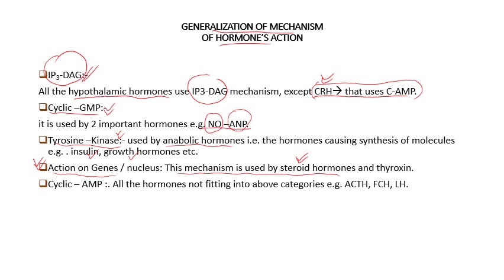The only non-steroid molecule that uses the action on nucleus mechanism is thyroxine. So if in the exam they ask about a single molecule utilizing the action-on-nucleus mechanism, that will be thyroxine, because we already know steroid hormones are utilizing this mechanism. Any hormone not fitting into the above categories will be utilizing cyclic AMP.